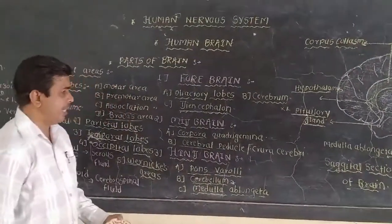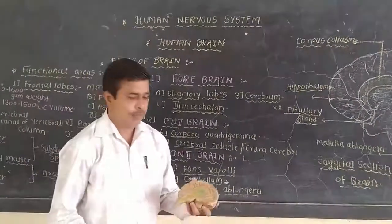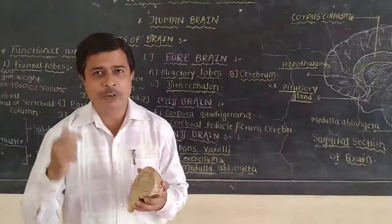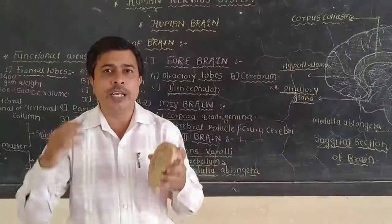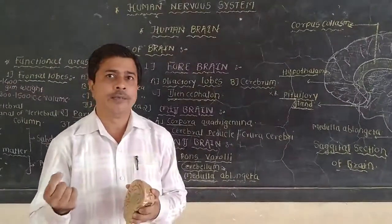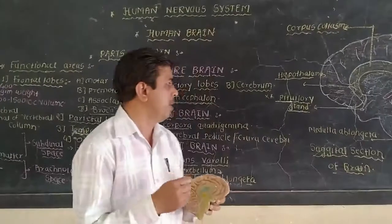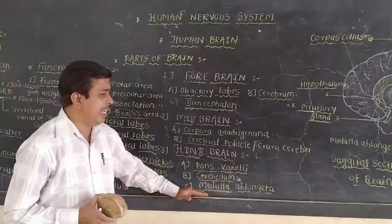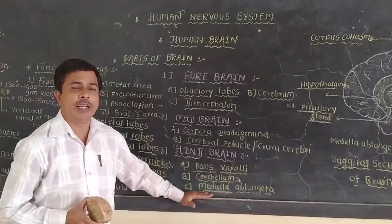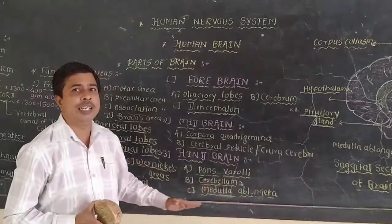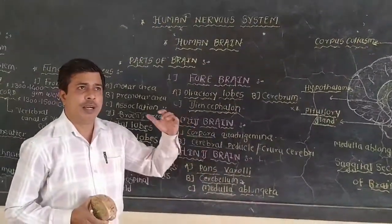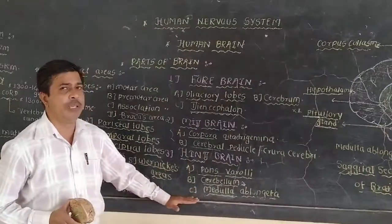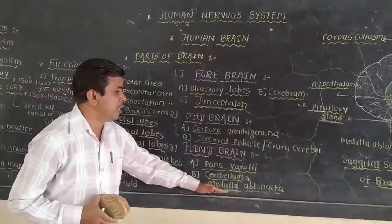The medulla oblongata is the posteriormost part of the brain and a very important structure. It controls all the involuntary actions of the body, such as respiration. Any injury to the medulla oblongata causes sudden death because it directly affects the respiration process — respiration stops immediately, causing the death of that person.